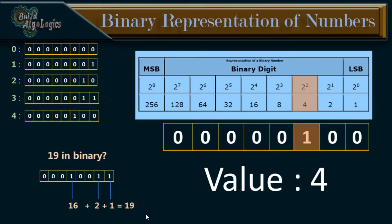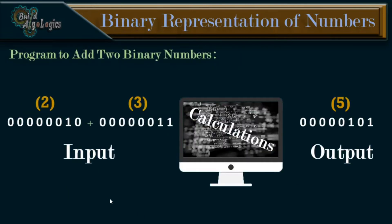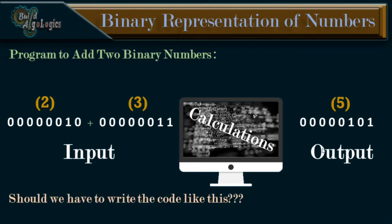Now we have a better understanding of binary language. Let's write a rough program to add two binary numbers. In binary, we'll write it like this — this plus sign also has some binary representation, but instead of getting into much detail, let it be like this. Now give this program to the computer as input, as the computer can understand this program very easily. It will execute it and give us a result, which is nothing but 5. But should we have to write code in this way? Will you be able to write any other programs using only zeros and ones? The answer is definitely no, because it will take much time and it will also be full of errors and bugs.